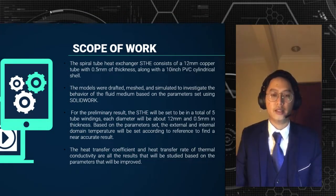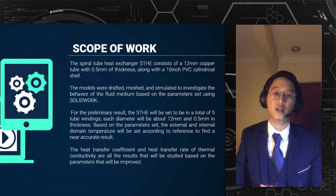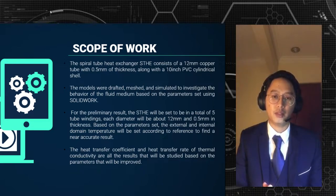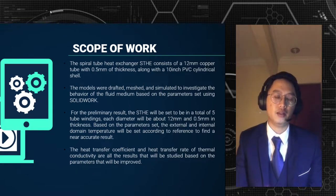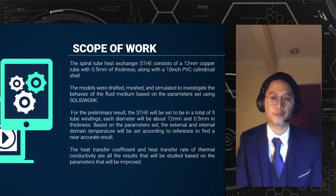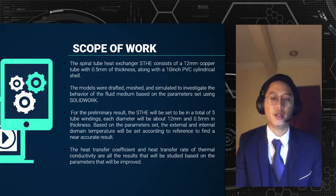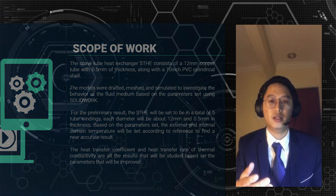Moving on to the scope of work, it is a rough overview of the design mechanism of the spiral tube heat exchanger. The product will consist of a 12 mm copper tube with 0.5 mm thickness inside a 10-inch diameter PVC cylindrical shell. The model will be drafted, meshed, and simulated using SOLIDWORKS software, with a preliminary setup of 5 tube windings. The internal and external domain temperatures will be set based on the design reference for a near-accurate result.